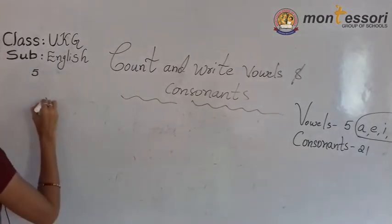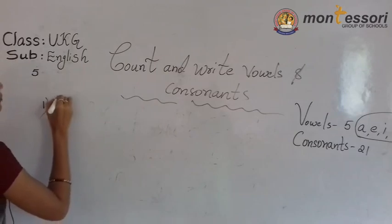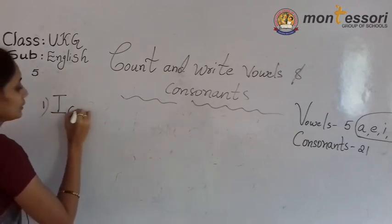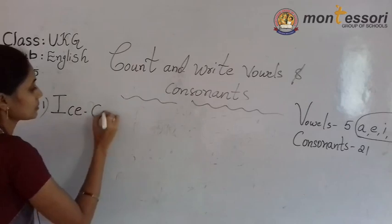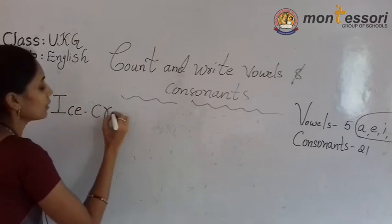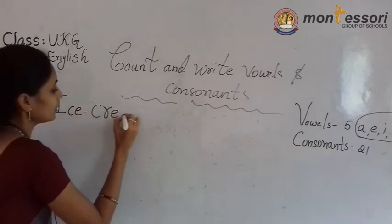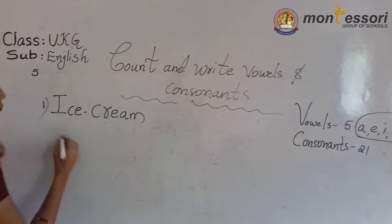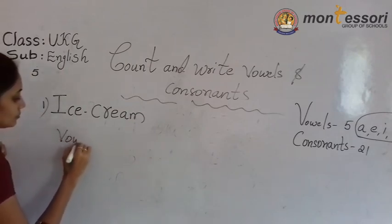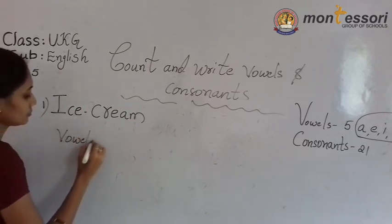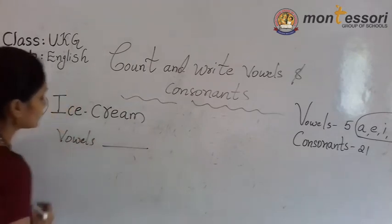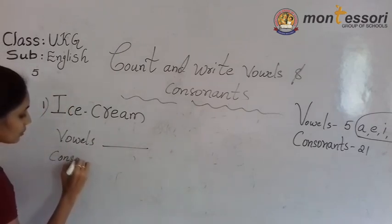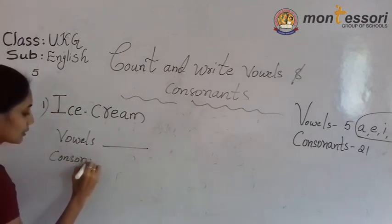First one: I, C, E, C, R, E, A, Y. Pick out the vowel letters. Next — consonants.